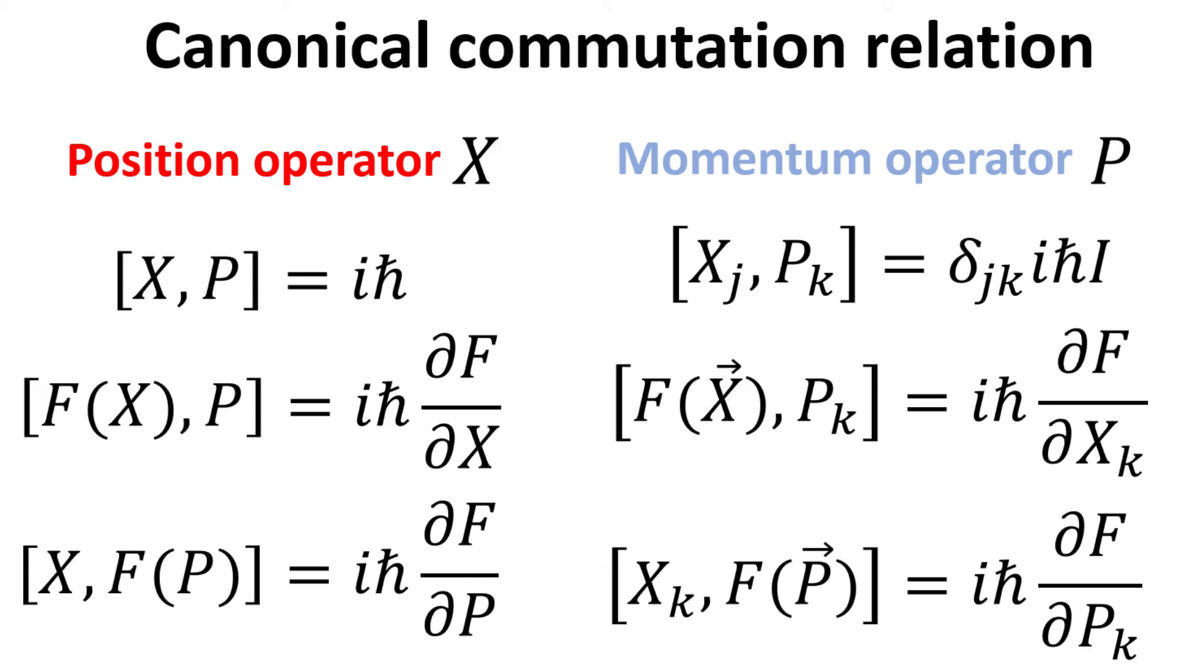A special class of operators known as the canonical conjugate operators, such as the position and momentum operator, which are related by definition such as the Fourier transform, follows the canonical commutation relation. We shall derive them in this video.